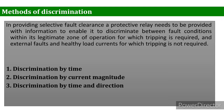In fault clearance, a protective relay needs to be provided with information to enable it to discriminate between fault conditions within its legitimate zone of operation for which tripping is required, and external faults and healthy load currents for which tripping is not required. In the method of discrimination, some information must obviously be derived from the available electrical quantities of current, voltage, and the phase angle between them, measured at the time of fault.